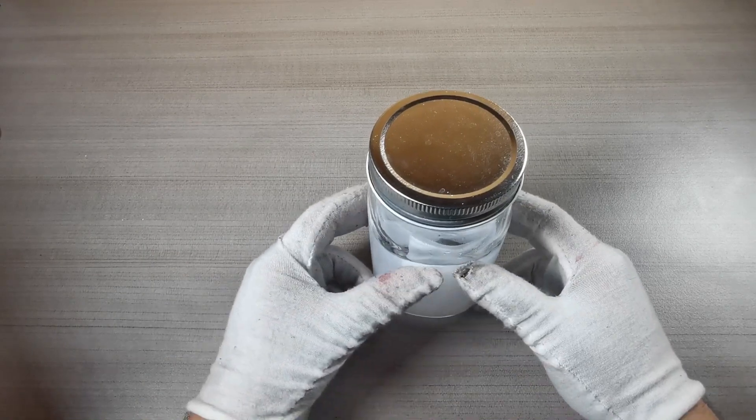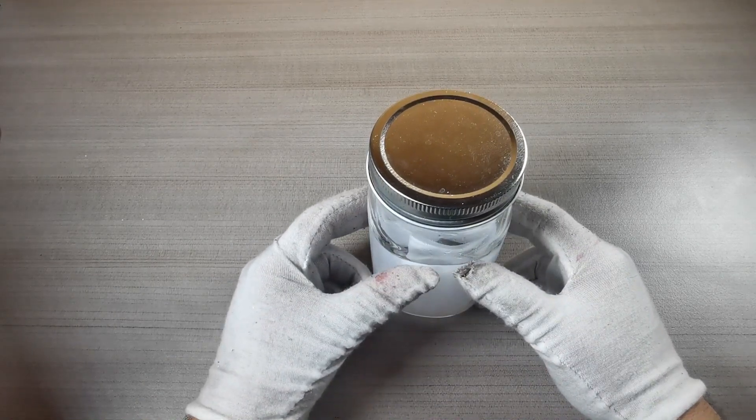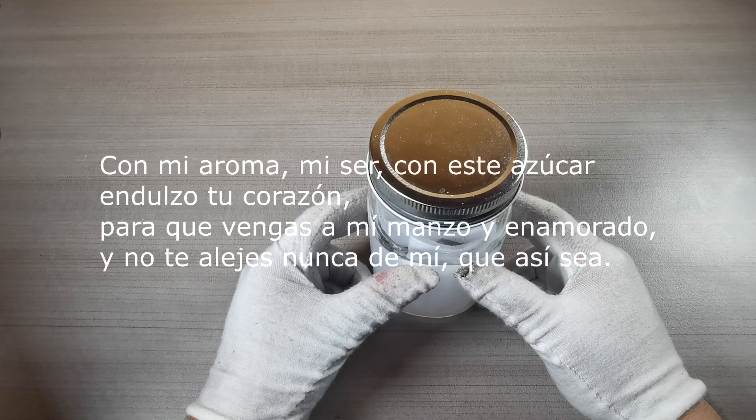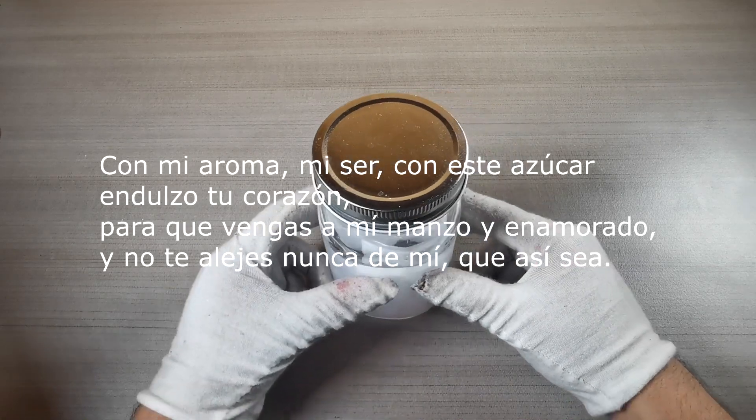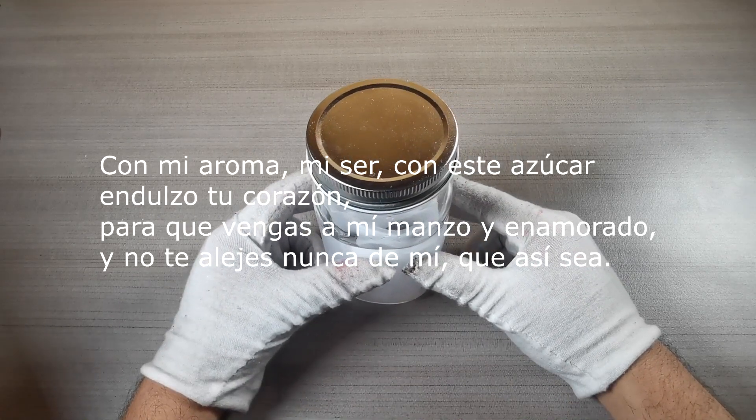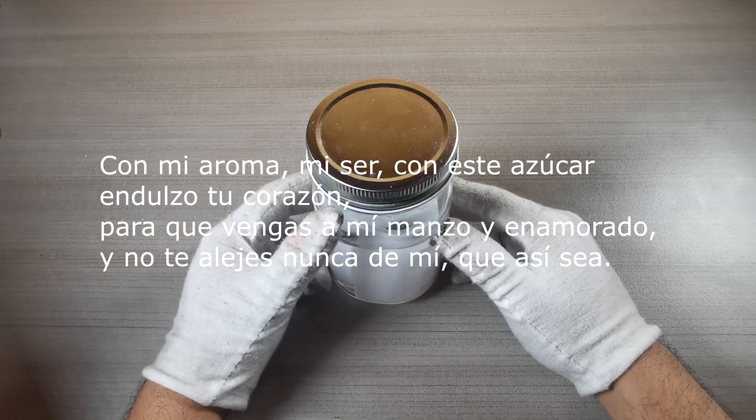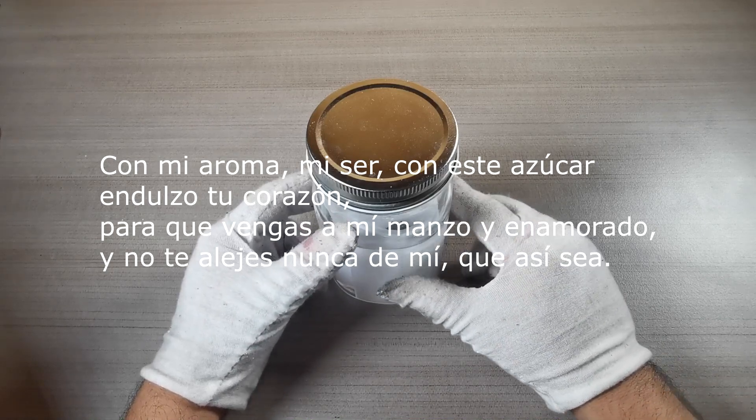Ahora vas a repetir el siguiente conjuro con mucha fe: con mi aroma, mi ser, con este azúcar endulzo tu corazón para que vengas a mí manso y enamorado y no te alejes nunca de mí, que así sea.